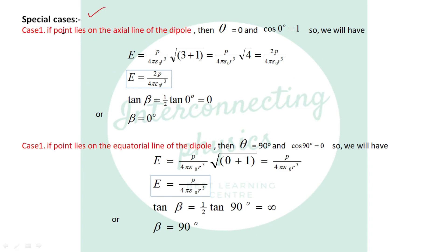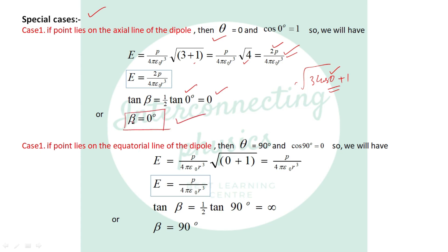Special cases: if θ = 0° (point P on axial line), E = p/(4πε₀r³) × √(3+1) = 2p/(4πε₀r³), which matches the axial result, and β = 0° (E along dipole moment). If θ = 90° (point P on equatorial line), cos90° = 0, so E = p/(4πε₀r³), matching the equatorial result, and tan β = ∞, so β = 90° (E perpendicular to dipole, i.e., opposite to p⃗).